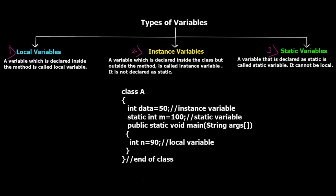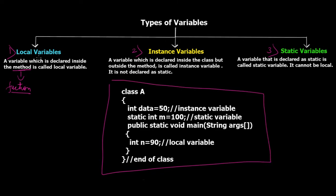A variable which is declared inside a method is called a local variable. In Java programming we call them methods because they are associated with object-oriented programming; in procedural programming we call them functions. In the example, inside public static void main — the starting point of program execution — we have the variable 'int n = 90'. This is an example of a local variable because it is declared inside a method.